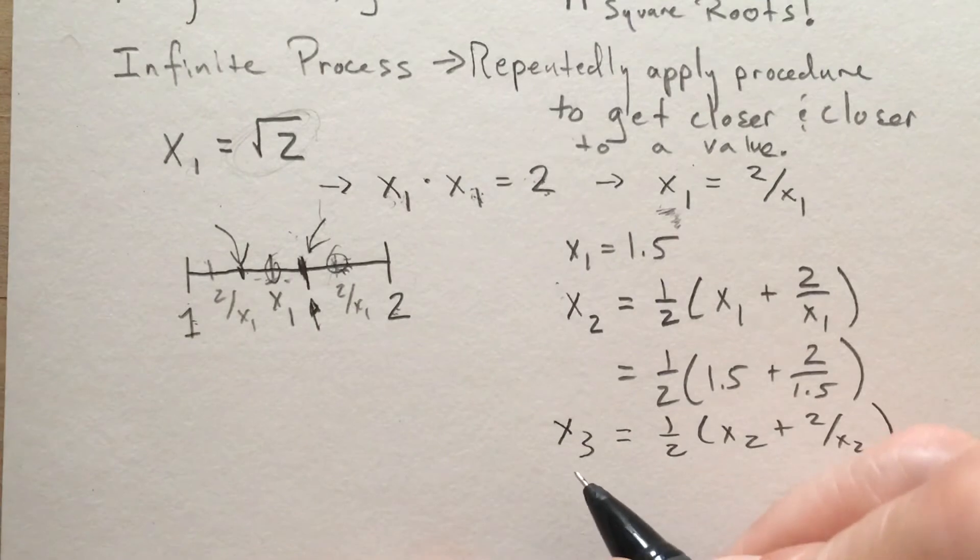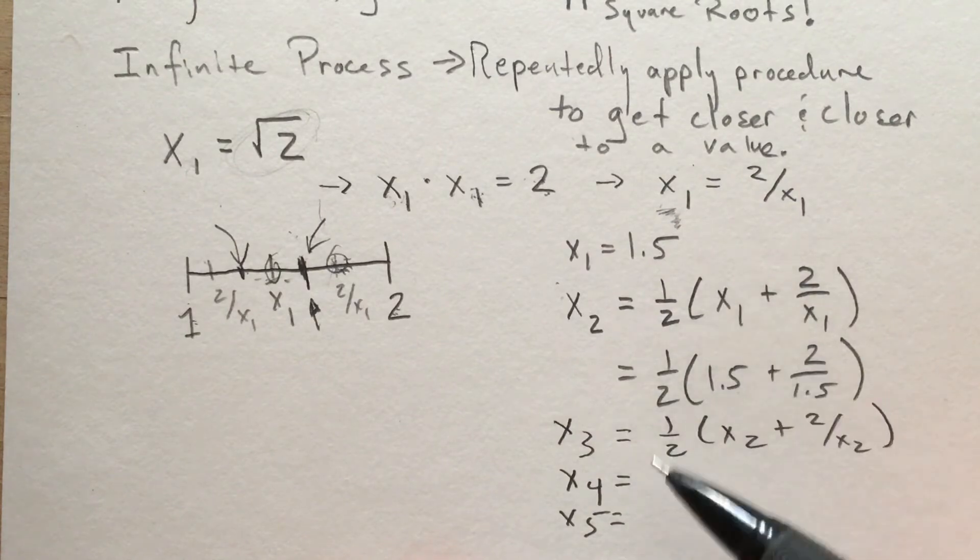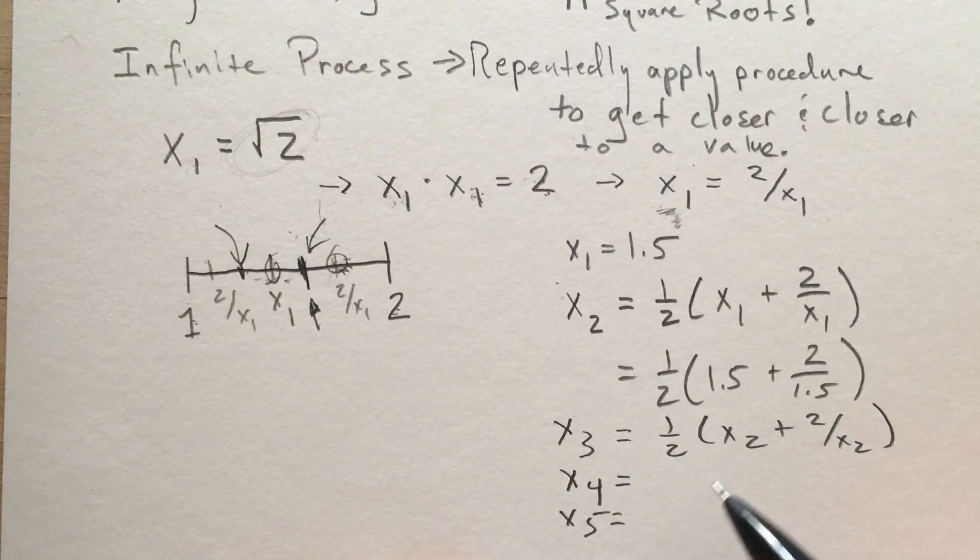In the problems that follow, you're going to be asked to compute a number of approximations and to look at some patterns in the decimals, as well as to compute another example: instead of the square root of 2, the square root of 3.